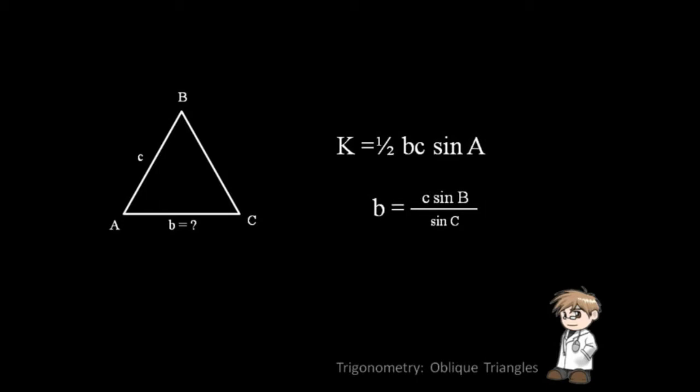If this is the formula for side B, then we can substitute B in the formula for solving the area of the triangle. This will be the result. Simplifying this will result in this formula.